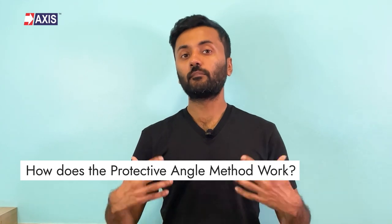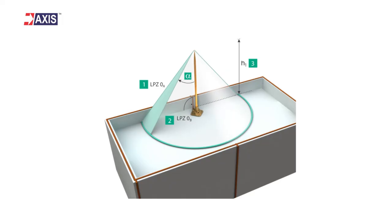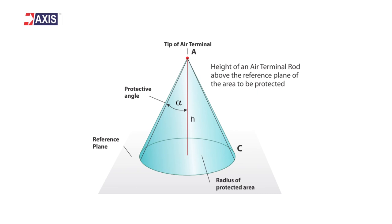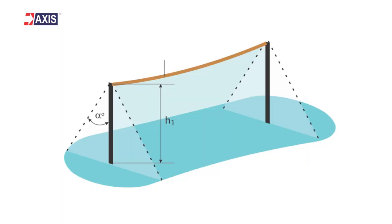How does the protective angle method work? The protective angle method is a 3D concept as shown in this figure. Think of the protected area like a cone — this cone starts from the very top of the air termination rod and spreads out all the way down to the structure's surface. The protected area will be cone-shaped in the case of a simple air termination rod. However, it can also be a tent-shaped protected area in the case of a catenary wire, where two or more air terminals are required.